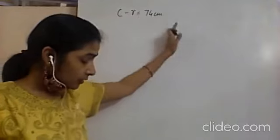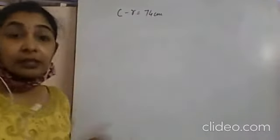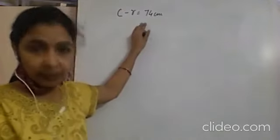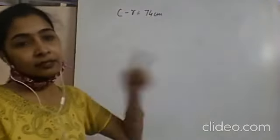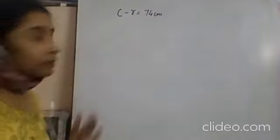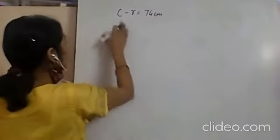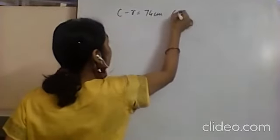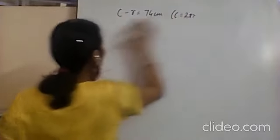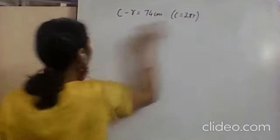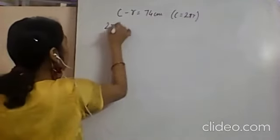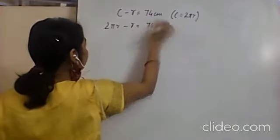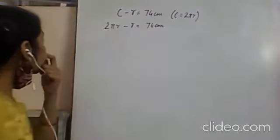With this information I can easily find the radius, and if I know the radius I can find the area. To find the radius, I put the formula for circumference: circumference equals 2πr. So in place of C I put 2πr, giving 2πr minus r equals 74 centimeters.